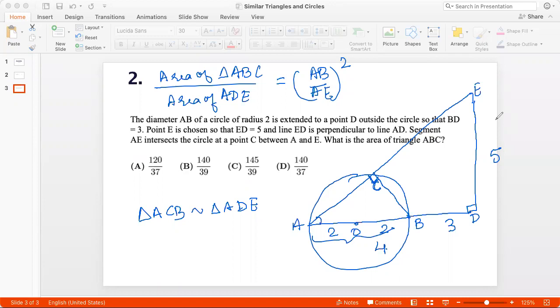And AE will be, if this is 5 and this whole is 7, then by Pythagoras theorem, AE will be square root of 25 plus 49, which is square root of 74. So I find that AB by AE, the whole squared is easily found.